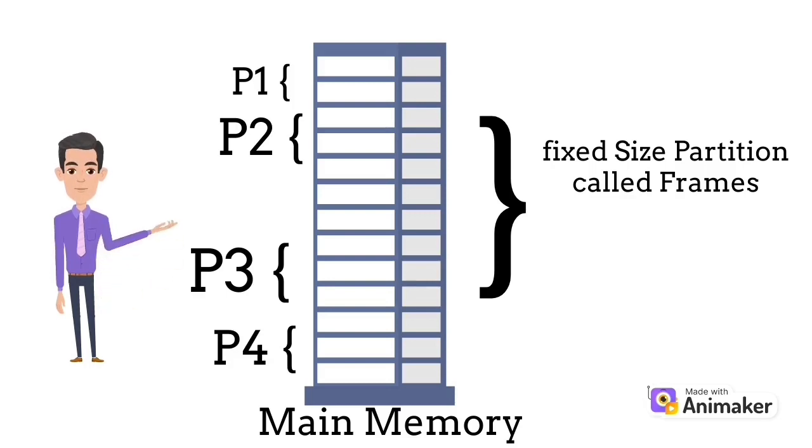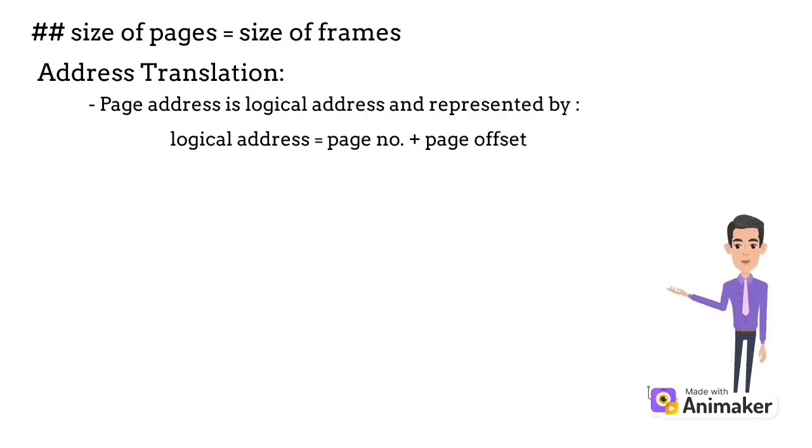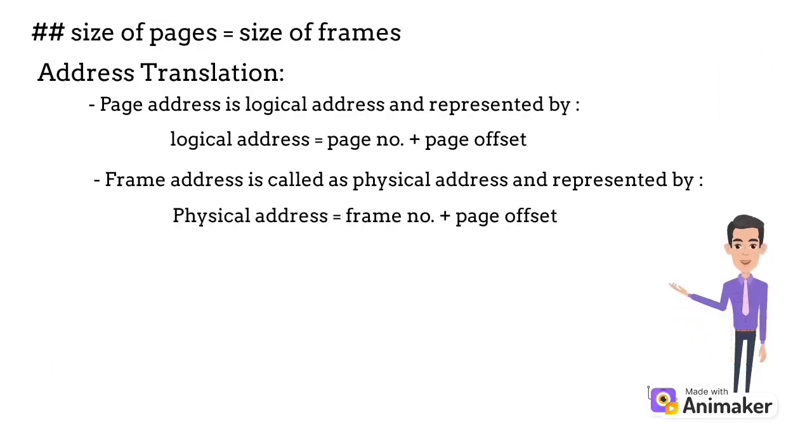Let us see how. A few things to keep in mind: first, the page size should always be the same as frame size. Then it is possible to reduce external fragmentation. The logical address is a combination of page number with page offset, and physical address is a combination of frame number with page offset.